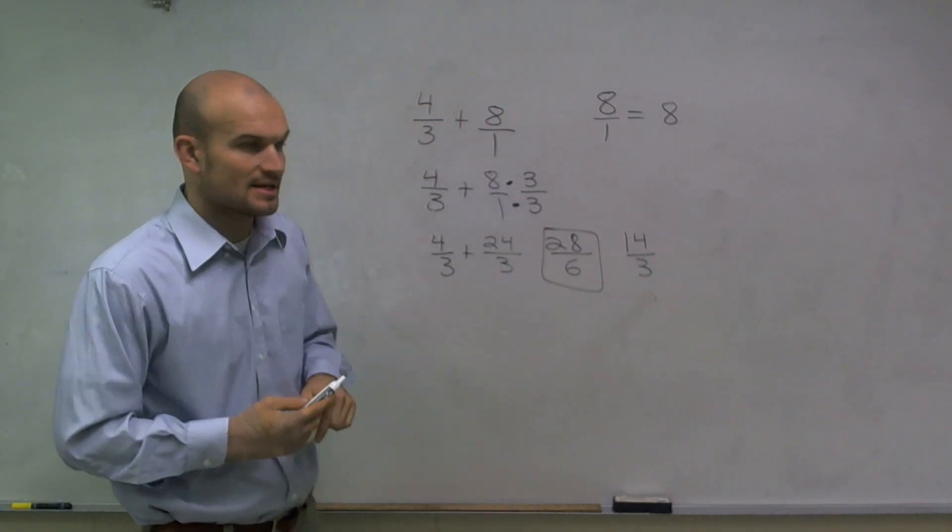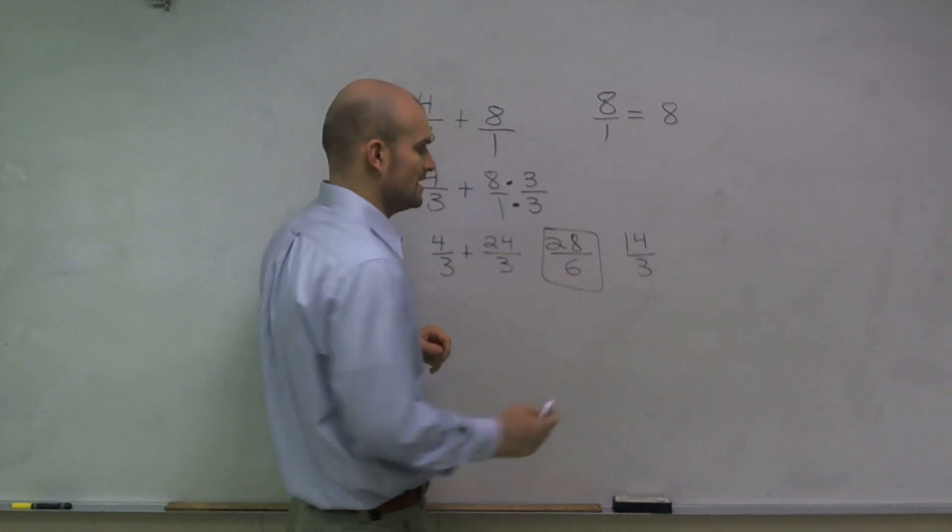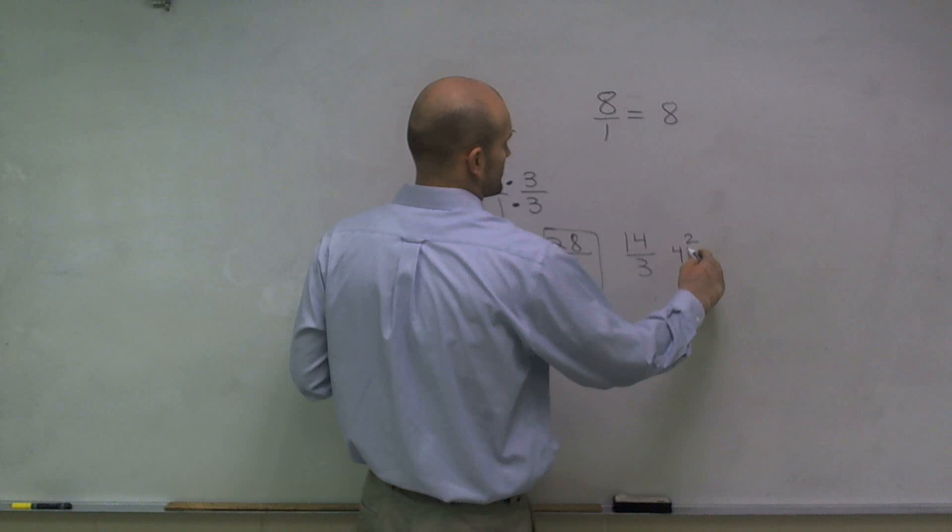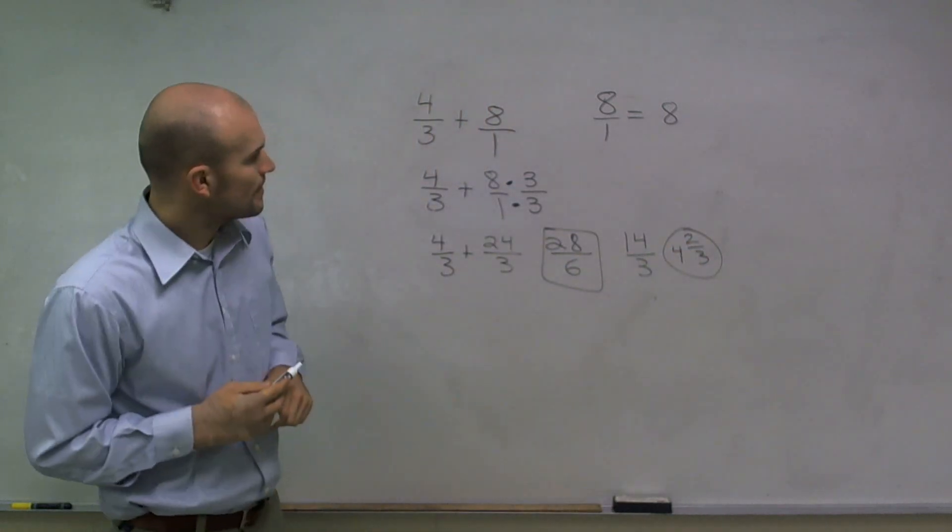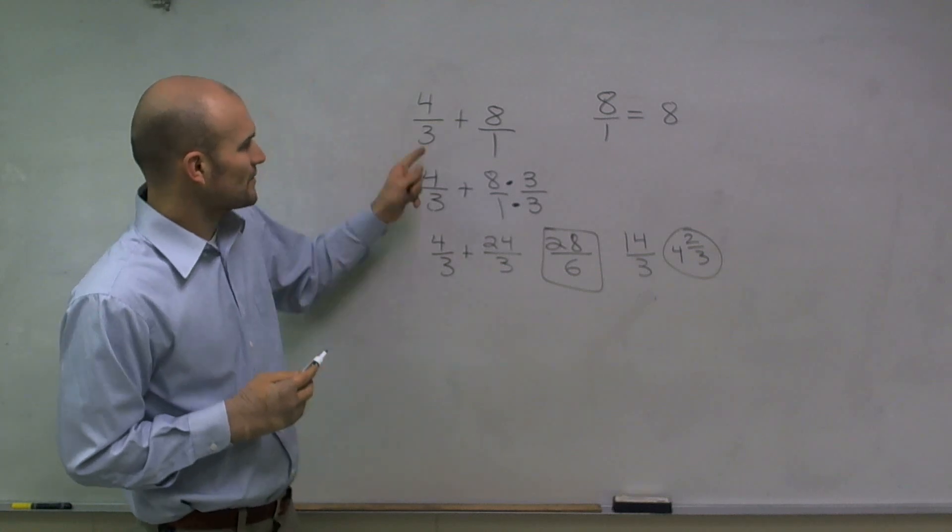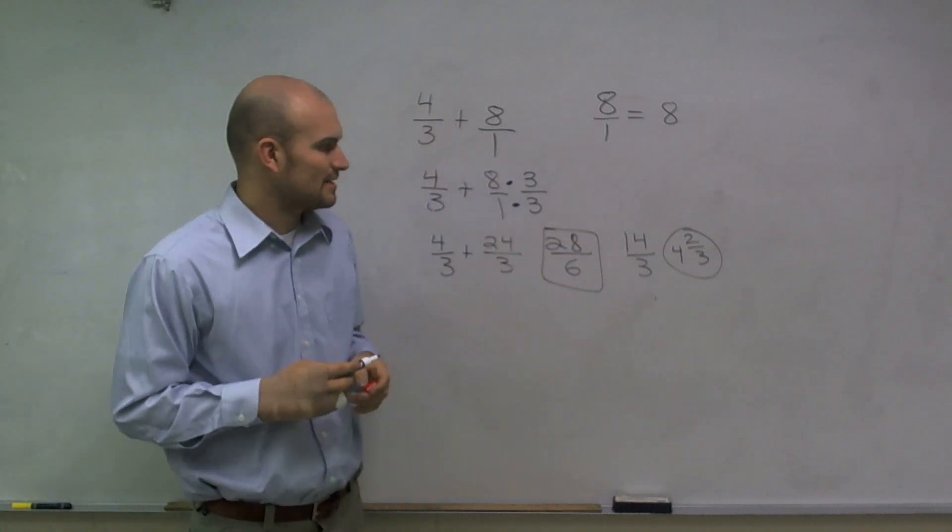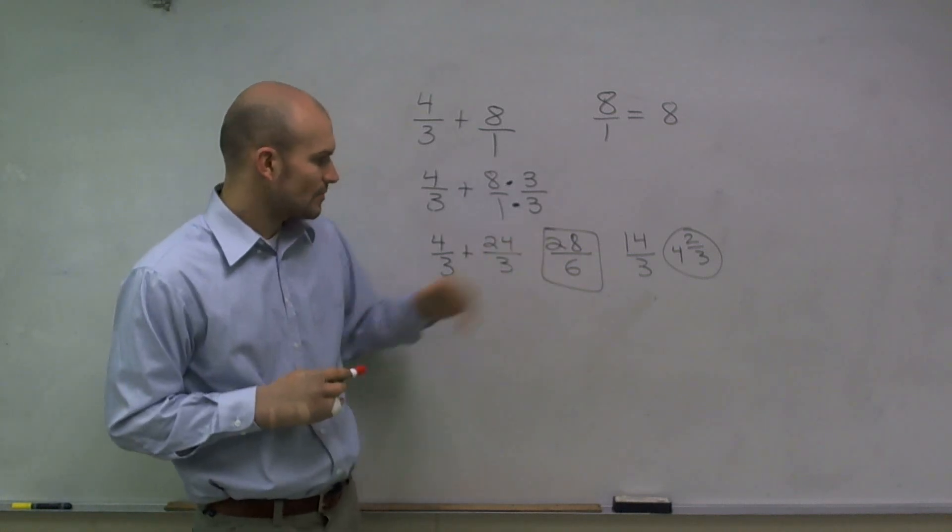And then if I wanted to write this as a mixed number, I could say 3 goes into 14 four times, with 2 thirds remaining. So 4 thirds plus 8 is going to end up equaling 4 and 2 thirds, or 28 sixths.